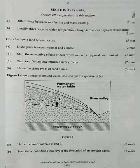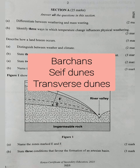Question 4B: name the three types of sand dunes. We have barchans, we have seif dunes also known as longitudinal dunes, and we have transverse dunes.